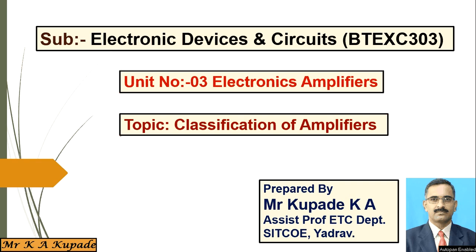In the previous lecture, we discussed the last point of unit number two, which is the current source. That includes the CMOS inverter as an amplifier, the active load, current source, and push-pull configurations. These points we discussed in the previous lecture.